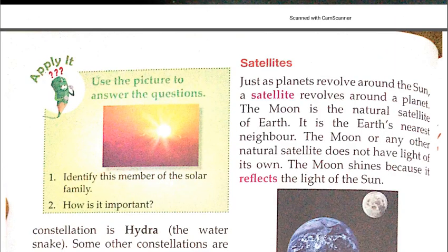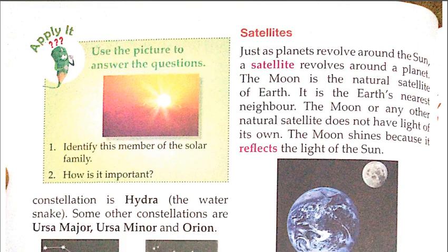Now about satellites: just as planets revolve around the sun, a satellite revolves around its planet. The moon is the natural satellite of Earth — chand jo hai woh haari dharti ka natural satellite hai. It is Earth's nearest neighbor. The moon or any other natural satellite does not have light of its own — the moon shines because it reflects the light of the sun.